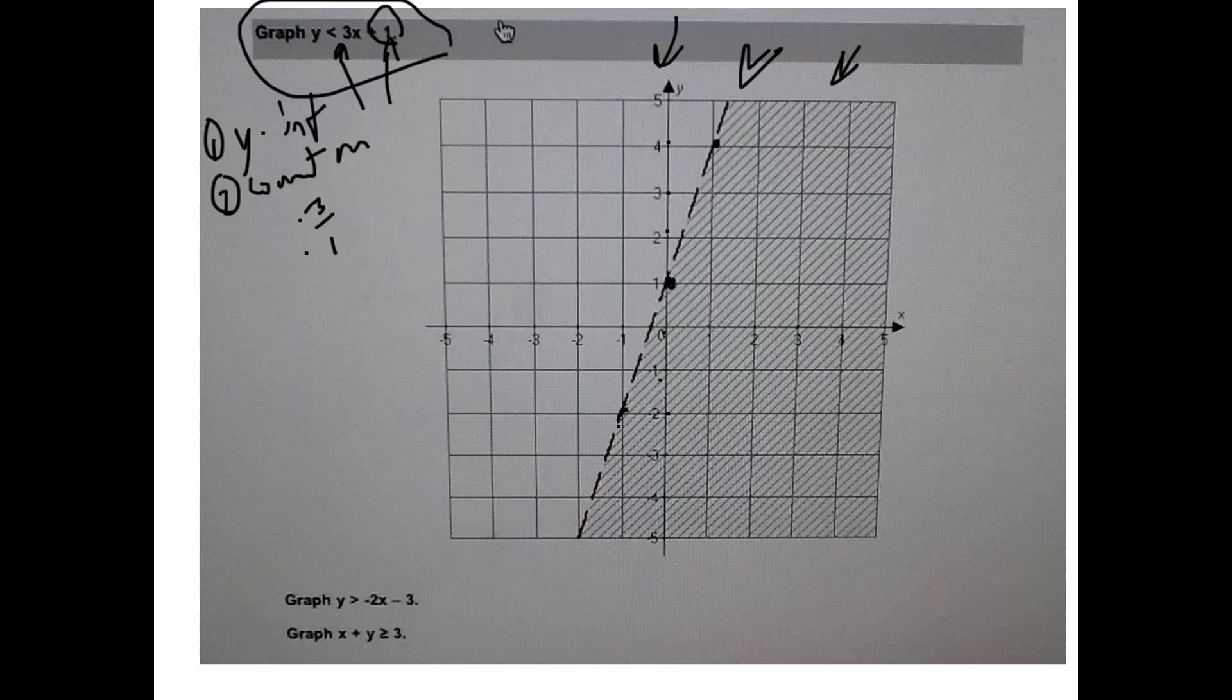Now the next thing you need to know that has to deal with inequalities is dotted or solid. If it is less than or greater than, it's dotted. If it's less than or equal to or greater than or equal to, it's solid. This one up here was not equal to. That means greater than or equal to or less than or equal to means it can be on that line. Just greater than or less than means it's just above or below it. That's why it's a dashed line.